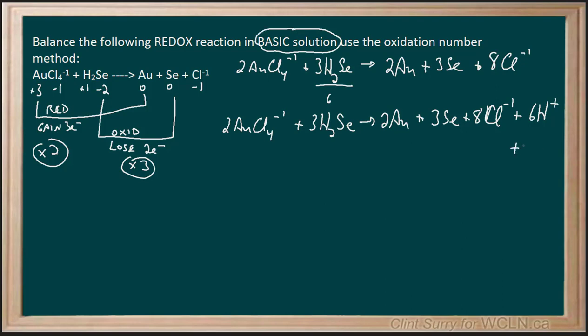So my next step is to add six hydroxide to balance against the hydrogen, but then I have to also add it to this side as well. Now, I end up with 2 AuCl4 minus one plus 3 H2Se plus 6 OH minus one.